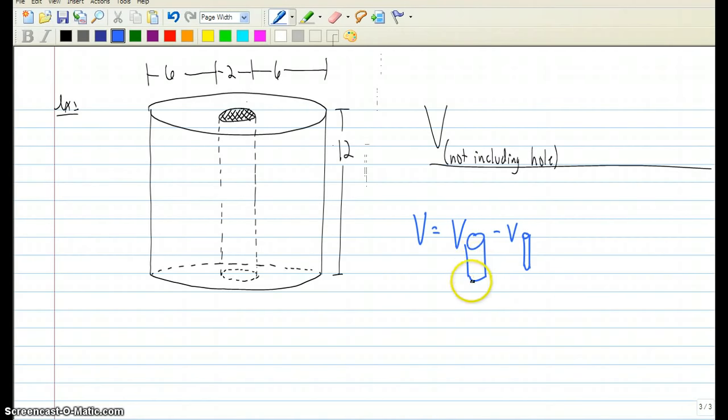So the volume of the big cylinder is pi times the radius of 7 squared times the height, minus the volume of the small cylinder is pi times 1 squared times the height. That's 588 pi minus 12 pi.